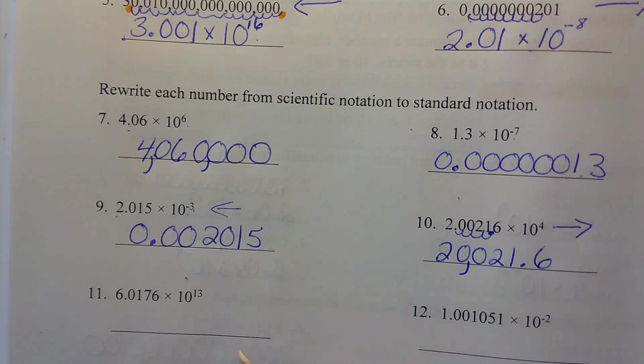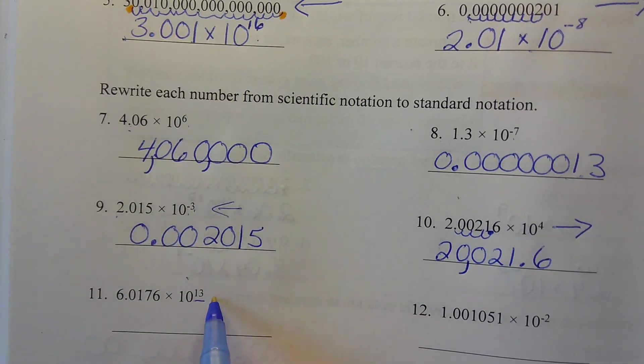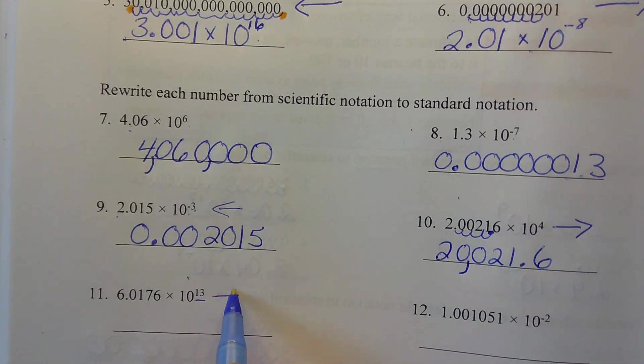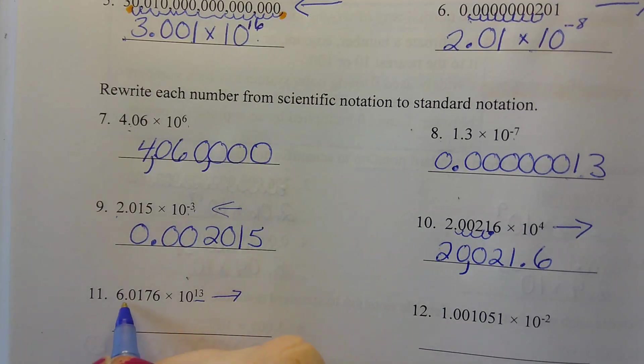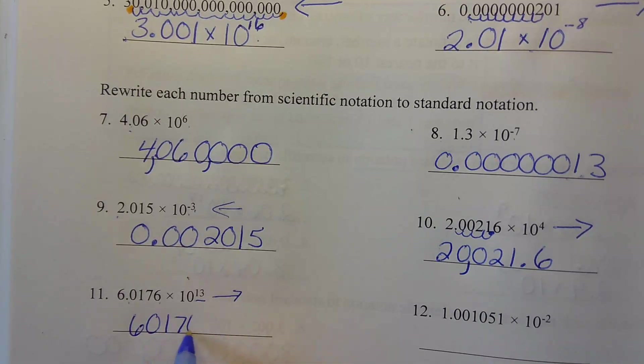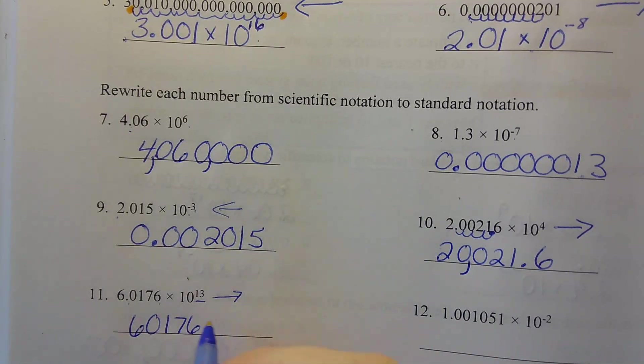Number 11, we've got a positive exponent. Numbers should be getting bigger. We have 1, 2, 3, 4 places after our decimal already, so we need to add 9 zeros.